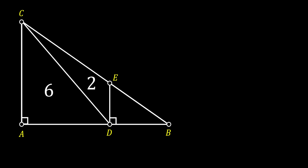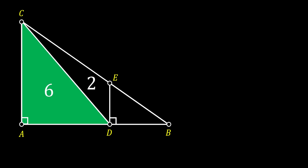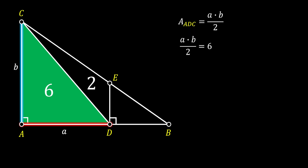Now let's have a look at the right triangle ADC. We can label the base of this triangle as a and its height as b. From this we can say that the area of triangle ADC must be equal to the base a times the height b over 2. Since we know that its area is equal to 6, we can substitute this value and then simplify to get that a times b must be equal to 12.